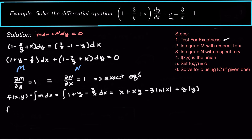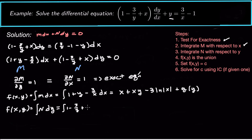Also, f(x, y) is going to be the integral of n with respect to y. So we integrate n, which is 1 minus 3 over y plus x dy. That gives us y minus 3 natural log of absolute value of y, plus xy, plus maybe something that only depends on x, so we call it h(x).